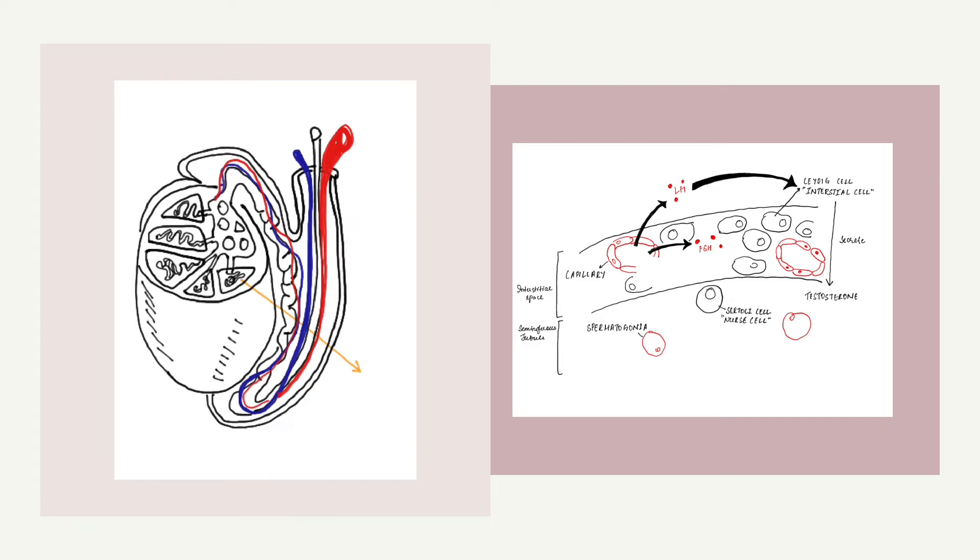Between tubules exist Leydig cells, cells located between seminiferous tubules that produce and secrete testosterone and other androgens important for sexual development and puberty.